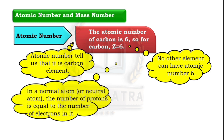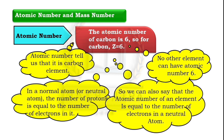In a normal or neutral atom, the number of protons is equal to the number of electrons. So we can also say that the atomic number of an element is equal to the number of electrons in a neutral atom. For carbon with atomic number 6, there are 6 electrons present in the carbon atom.